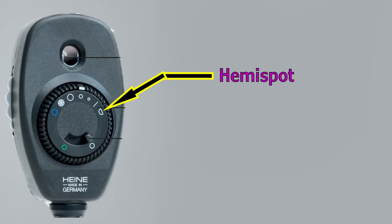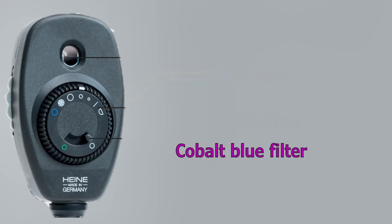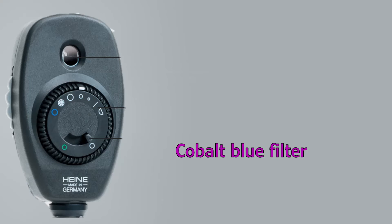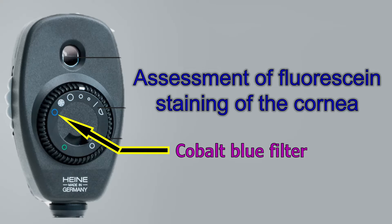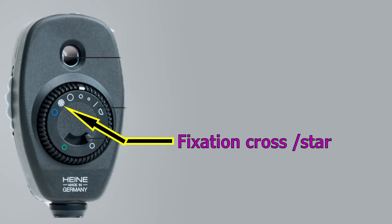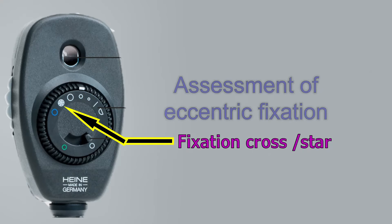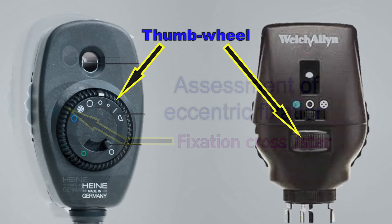A hemispot that reduces reflections, a cobalt blue filter to help in assessment of fluorescent staining of the cornea, and finally a fixation star that projects a graticule onto the retina for assessment of eccentric fixation. These are all available via a thumb wheel.